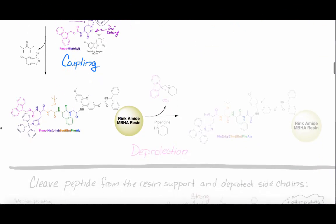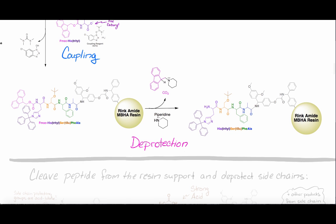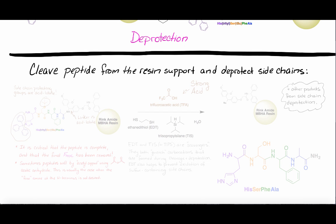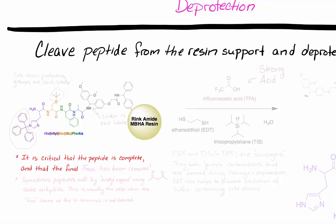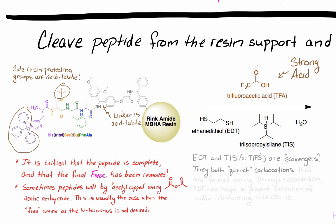After the peptide chain is complete, the final Fmoc should be removed and the N-terminus can be either left as a free amine or capped with an acetyl group. To cleave the peptide from the resin and remove the side chain protecting groups, acid is used. TFA is a common cleaving reagent. It is a strong acid and it will react with the linker and the side chain protecting groups, which are acid labile.